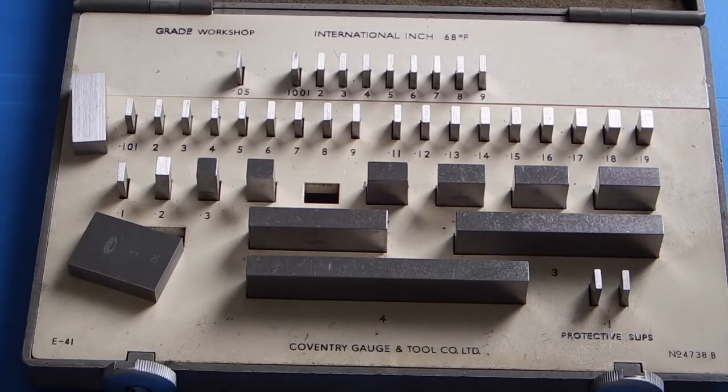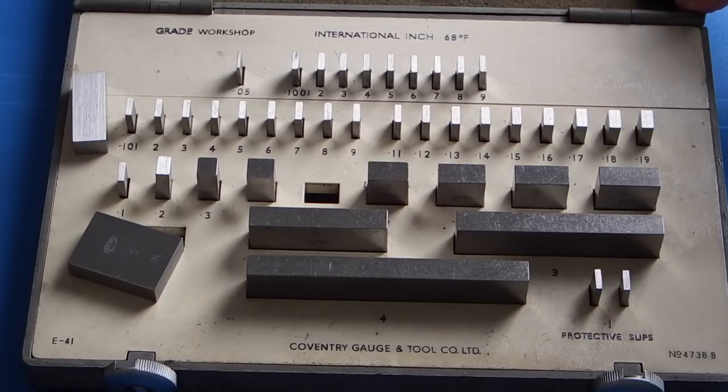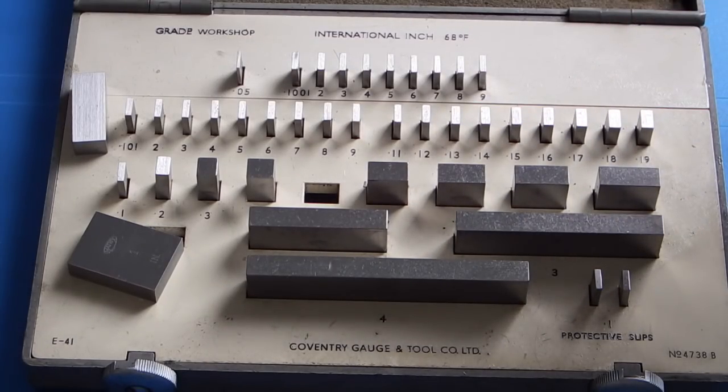Each set of blocks should have a calibration certificate showing the tested size of each block and the error of each block. Now I haven't got a certificate with these, and for me it's not worth paying to get a certificate because it would be quite expensive. I don't need a calibration certificate because I've not had any slip gauges up to now, and this is far better accuracy than what I've had in the past, so at least now I can check my micrometers.